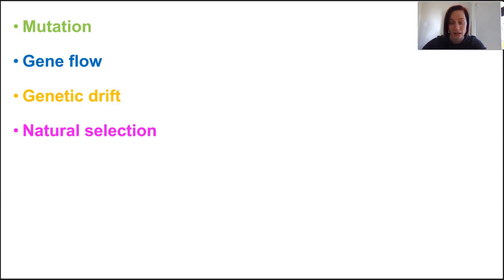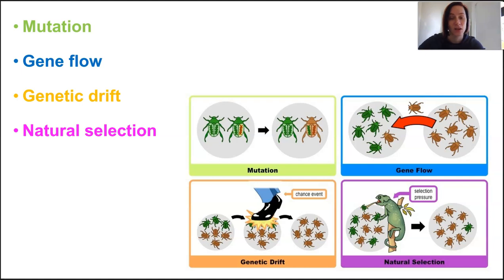Microevolutionary changes occur in a number of ways. We're talking mutation, gene flow, genetic drift, natural selection. And that is going to change how frequent an allele appears in that population and they're the four we're focusing on.